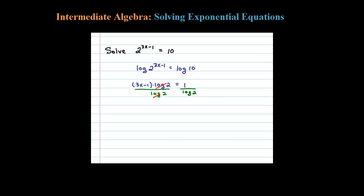On the left side these cancel, and that leaves us with 3x minus 1 equals 1 over log of 2. Eventually we'll do that on a calculator. And then we would add 1 to both sides, so that gives